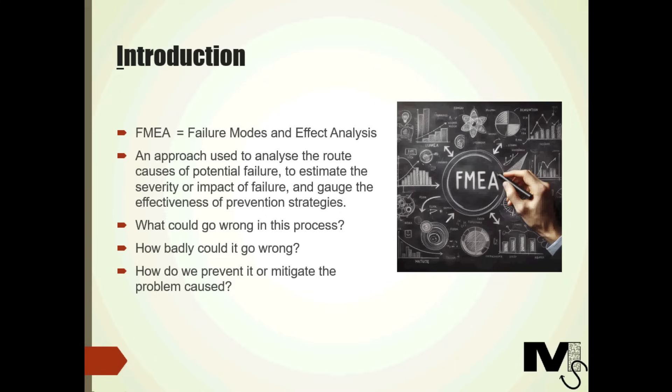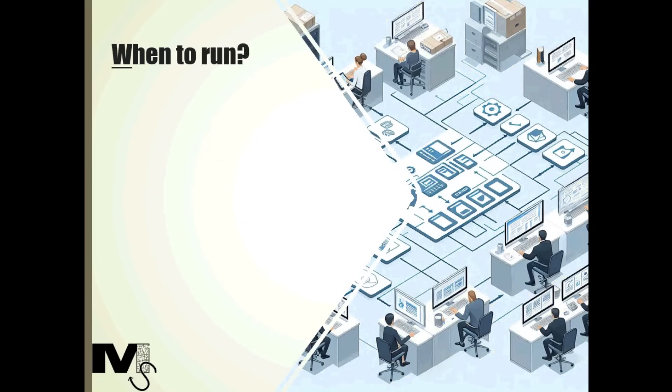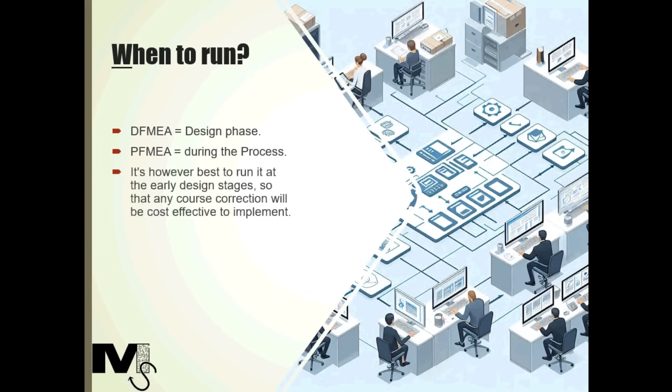Now let's look at when companies or teams typically run FMEA. FMEA can be used during the design phase to prevent failures in the product, project or process. Here it is called DFMEA or design FMEA. It can also be used during the process to improve the process and avoid further problems. Here it is called PFMEA or process FMEA. It is however best to run it at the early design stages so that any course correction will be cost effective to implement.